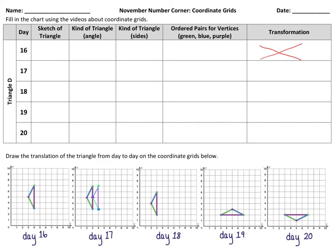We can see that the triangle was here and that it has moved to the left. When a shape slides, it is called translation, or translates. So we are going to write "translates." Which direction? Left. It moved 1 unit to the left.